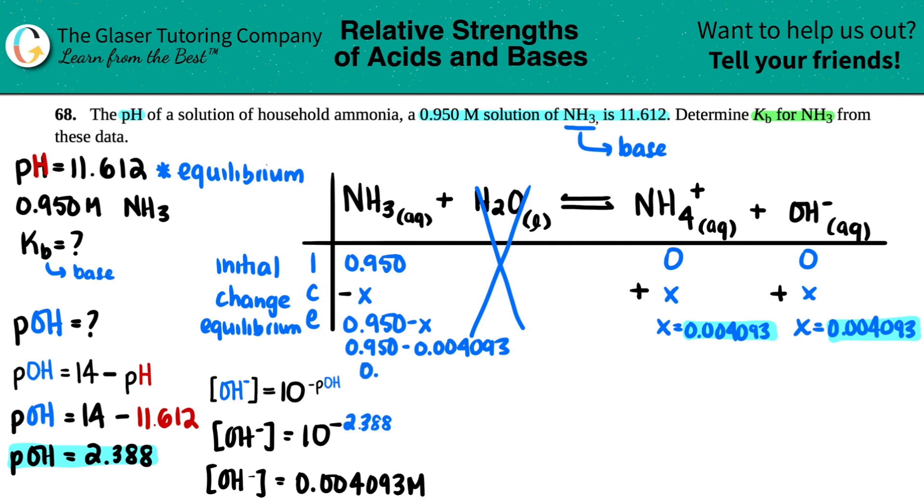Big number, but we don't like to round if it's not the final answer. So 0.945907. Okay. Now we finally know all of the equilibrium concentrations. We could find out the KB.